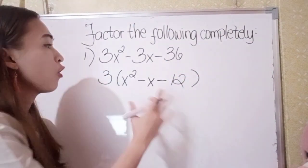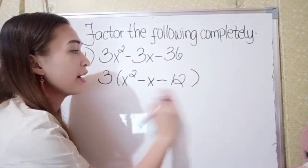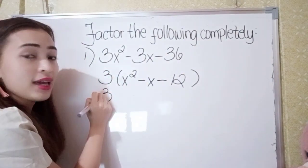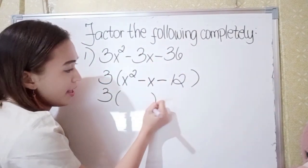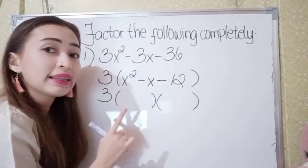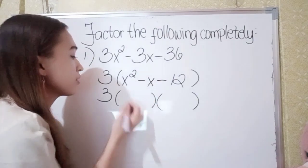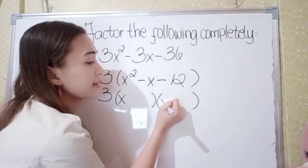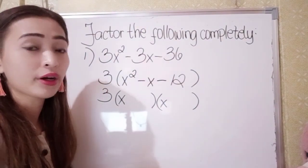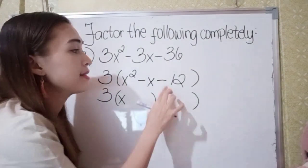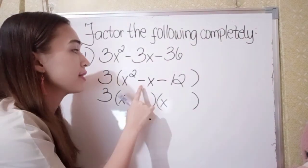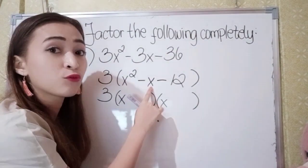After that, we're going to factor this. Write 3, and then, what is the factor of x squared? The factor of x squared is x times x. Next, think of a number — if we multiply, the answer is negative 12, but if we add them, the answer is negative 1.